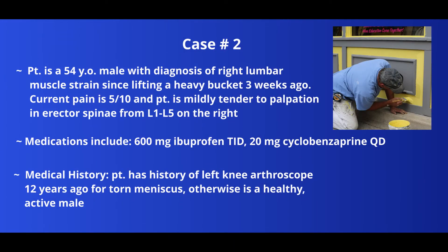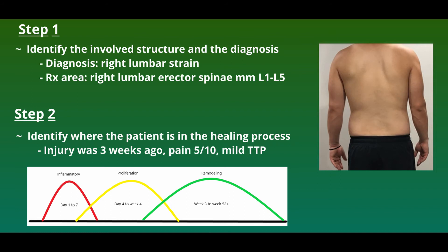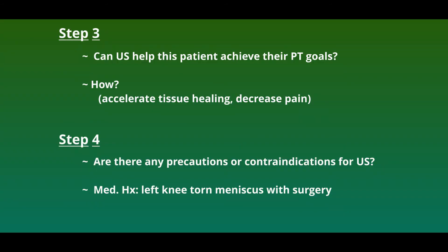In this case, we have a 54-year-old male with complaint of right low back pain that resulted from an acute injury three weeks ago. He presents with pain 5 out of 10 and tenderness to palpation in the right erector spinae muscles between L1 and L5. Medications include ibuprofen, an anti-inflammatory three times a day, and cyclobenzaprine once a day, which is a muscle relaxer. With the exception of knee surgery 12 years ago, our patient is generally a healthy male. We have a strain of the right lumbar erector spinae muscles, which are deep to the latissimus dorsi and thoracolumbar fascia. Based on the time and symptoms, we would assume he has transitioned into the proliferation phase. Since ultrasound can help accelerate tissue healing, it would be beneficial for this patient.